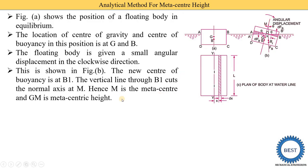What is point M? M is the metacentric point, and the distance between G and M is called the metacentric height. So this distance G to M is called the metacentric height. We need to derive the equation for the metacentric height, meaning we need to find the equation for G to M.